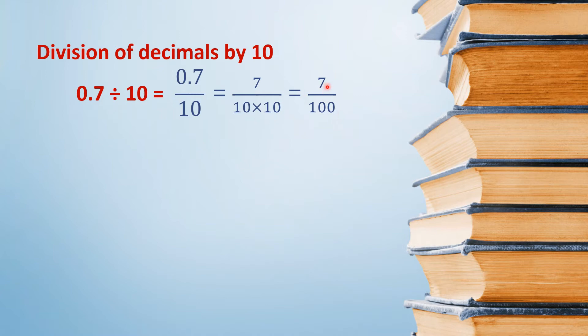Now, for this fraction, which is a decimal fraction, you can convert it to a decimal number. We have already learned that when there are two zeros in the denominator — there is 100 — so there will be two decimal places. It means 0.07.